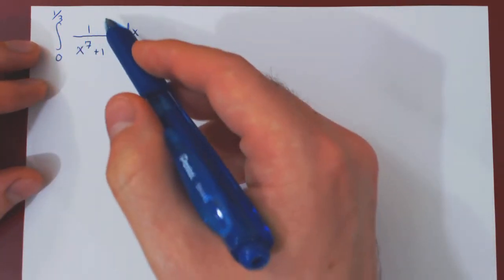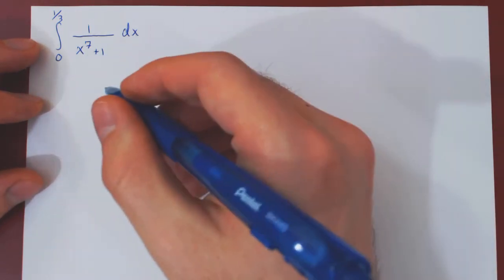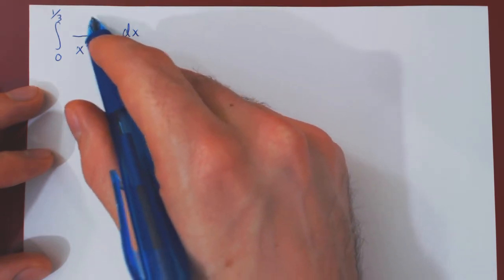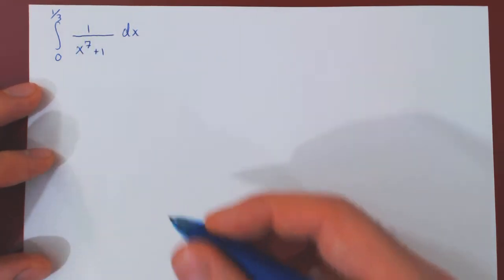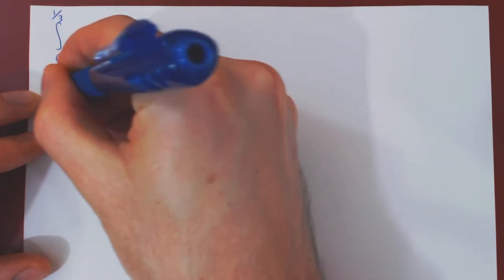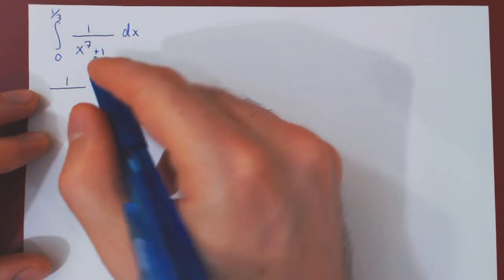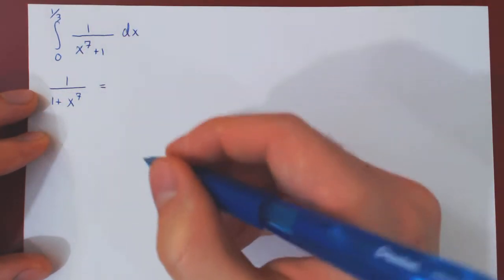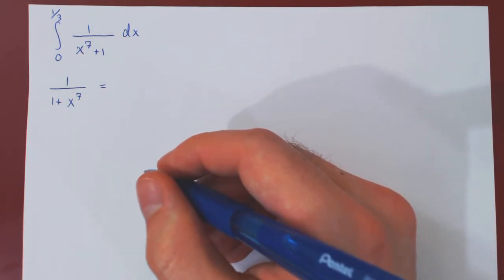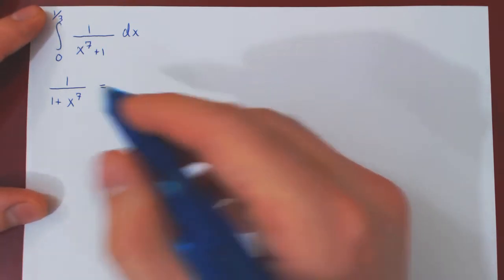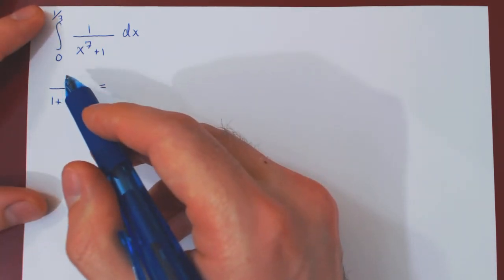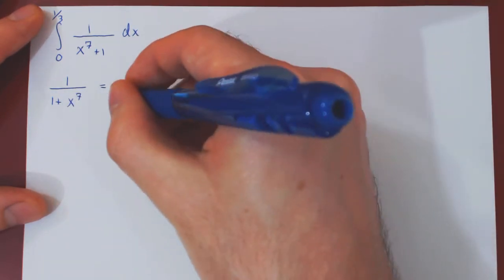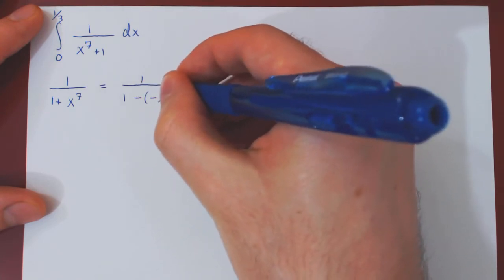So instead we'll attack this from the point of view of power series. Let's find a power series representation for the function we are trying to integrate. We have 1 over — and here I will swap the two terms — 1 plus x⁷. I want to use our knowledge of geometric series and write this in the form 1 over 1 minus r, which I can do simply as 1 over 1 minus (−x⁷).